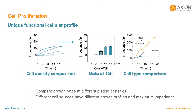Different cell lines exhibit different patterns of attachment, growth, and interaction behavior that form their unique cellular profile. The Maestro Z impedance assay allows you to track this cellular profile and distinguish cells based on type, density, morphology, and attachment. The cellular profile can also be used to ensure cell quality and purity, quantify growth rates, optimize assay timing, and rapidly optimize cell density and extracellular matrix coating conditions.